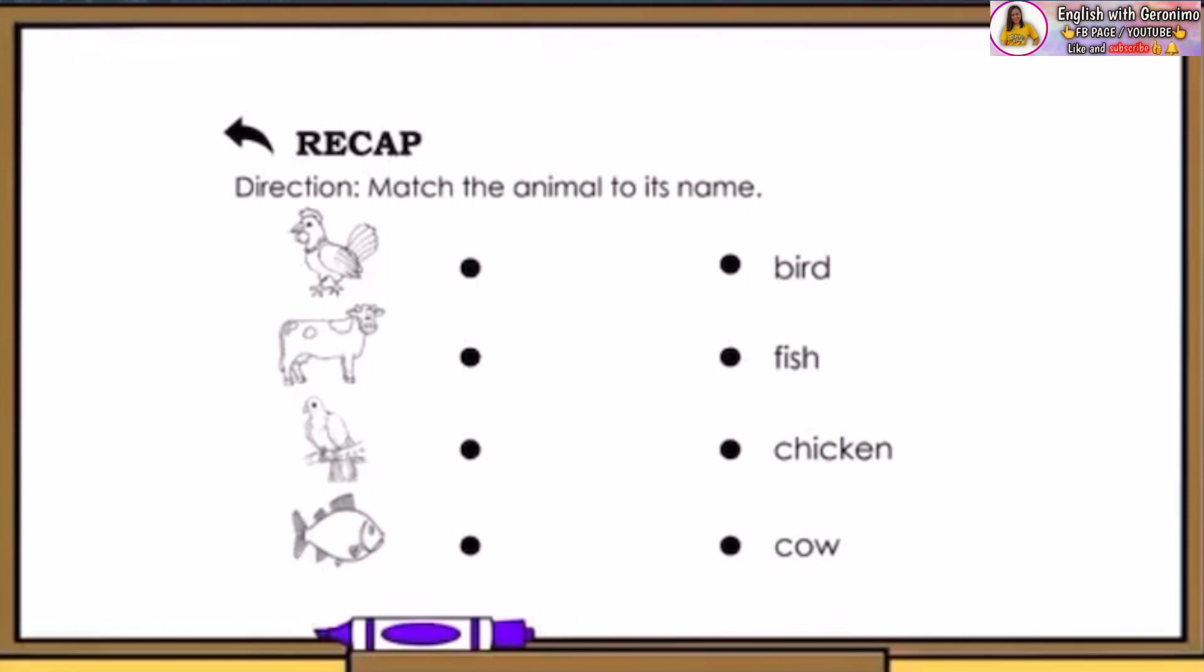This is a chicken. Yes, this is its name. How about this one? This is a cow. You are right. Bird. And its name goes here. Last, Fish. And it goes here. How many correct answers did you get? Great job!